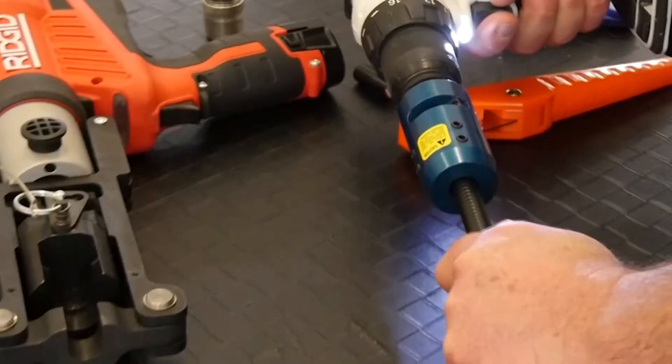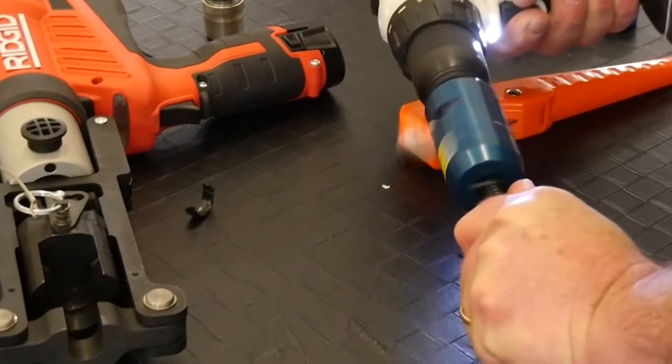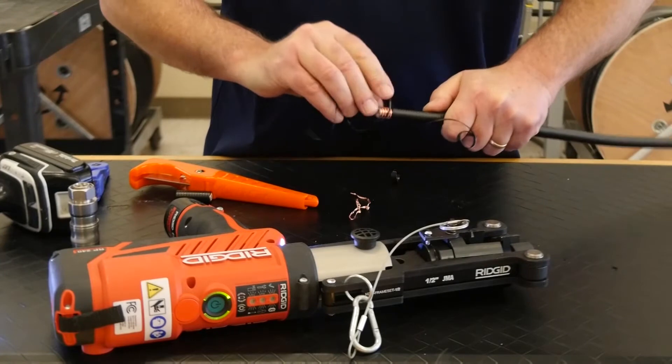Attach the proper SP12S prep tool to the drill. Actuate the drill to remove the jacket and expose the center conductor. Proper prep is achieved when the center conductor is chamfered.